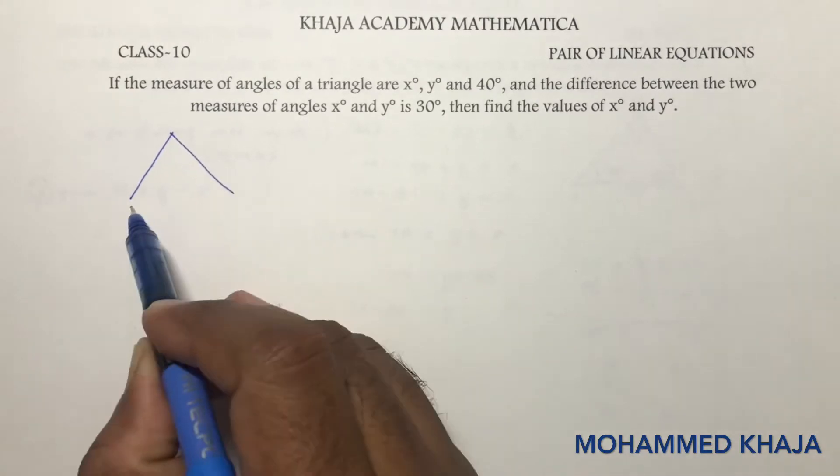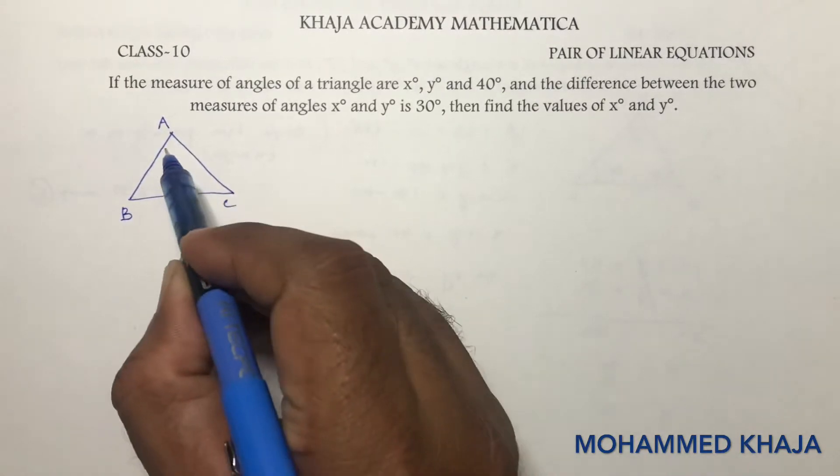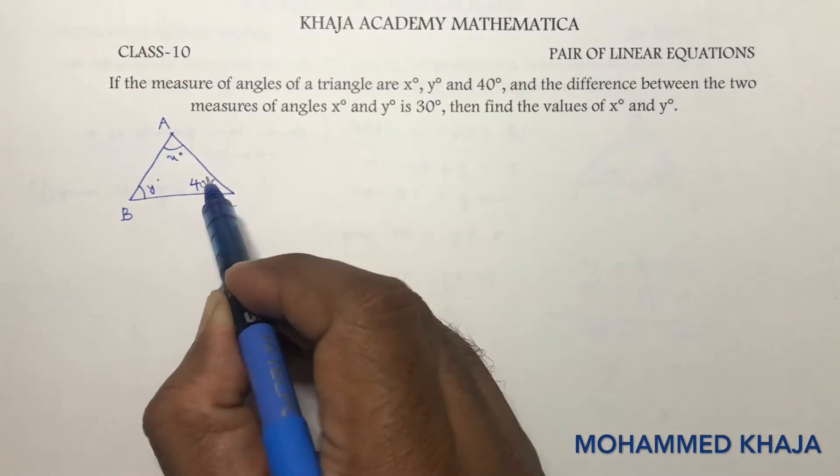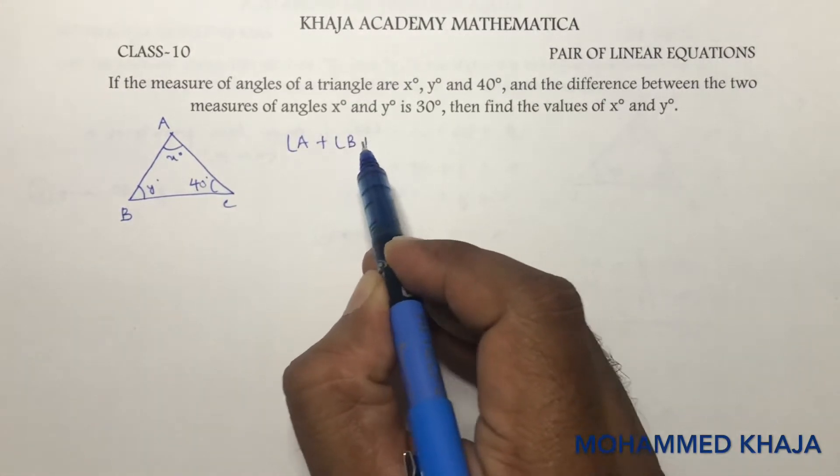Here we have three angles of a triangle, so I'll take a triangle ABC. The three angles are: one is x degrees, the other one is y, and the third one is 40. So angle A plus angle B plus angle C equals 180 degrees.